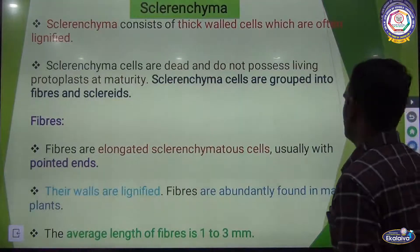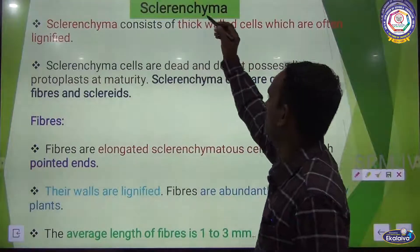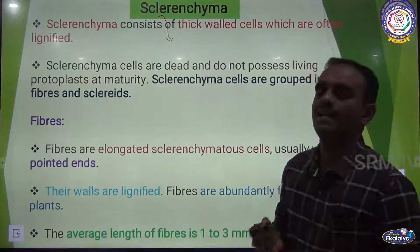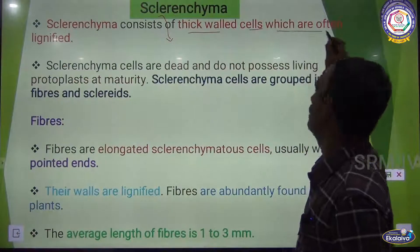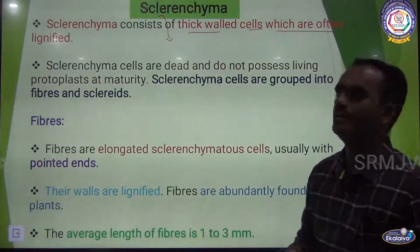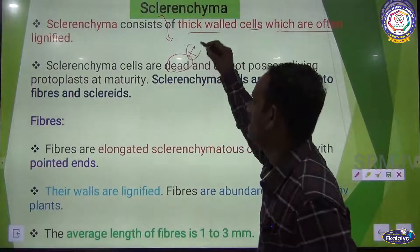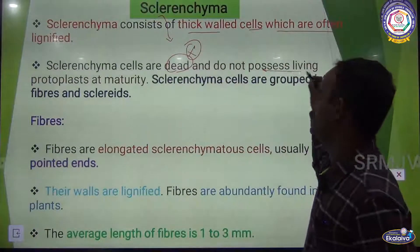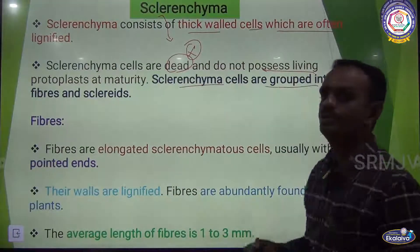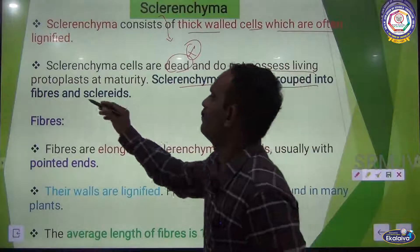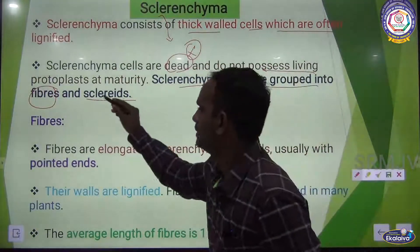The next one is sclerenchyma. Sclerenchyma consists of thick-walled cells which are often lignified. The sclerenchyma cells are dead cells and do not possess living protoplasts at maturity. Sclerenchyma cells are grouped into two: one is fibers and another one is sclerids.